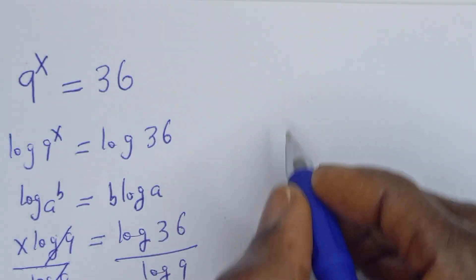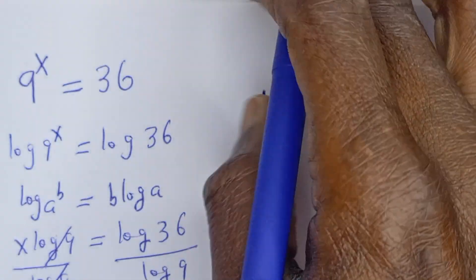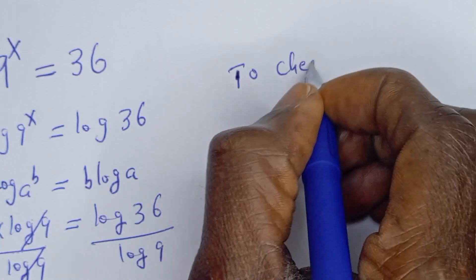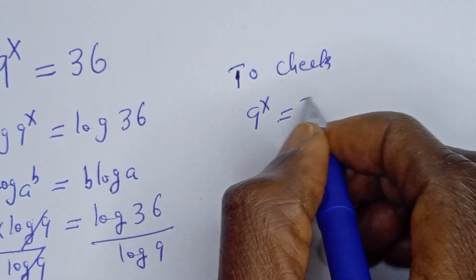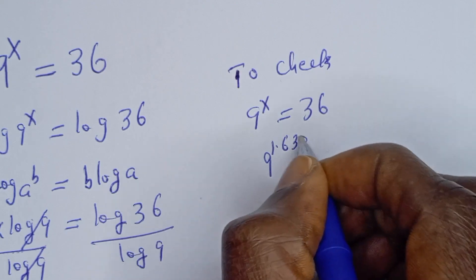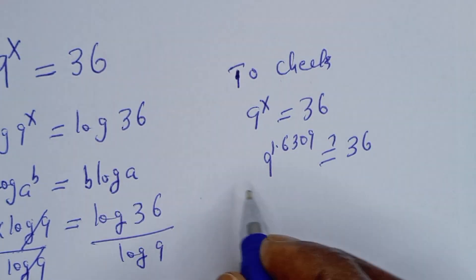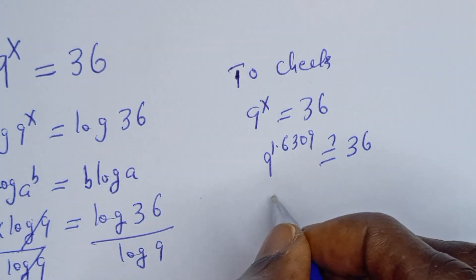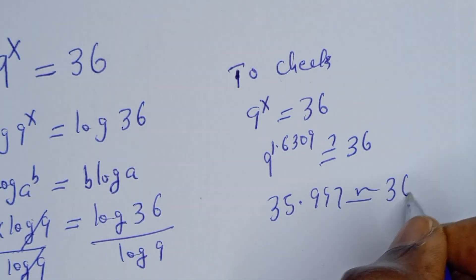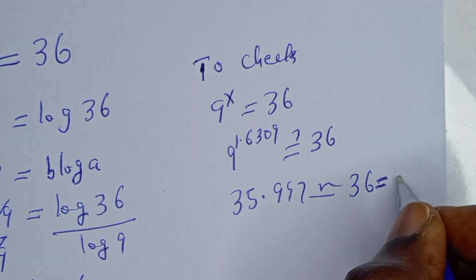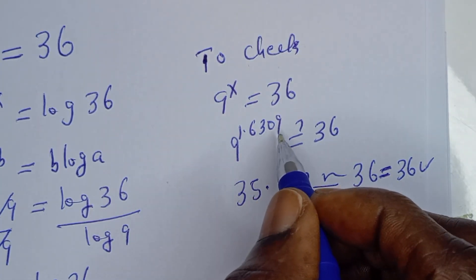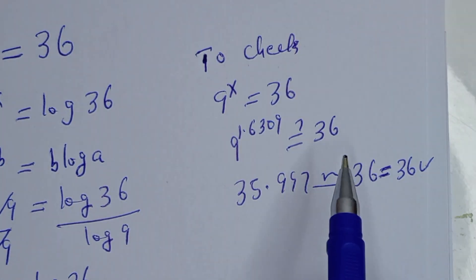Let's check. We have the given equation 9 to the power of s is equal to 36. When s is 1.6309, we have 9 to the power of 1.6309, which equals approximately 35.997, which is approximately 36. This confirms our answer is correct at s equal to 1.6309. Thank you for watching — don't forget to like, share, comment, and subscribe to my channel. Bye bye!